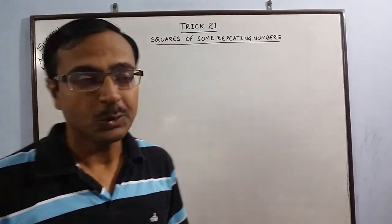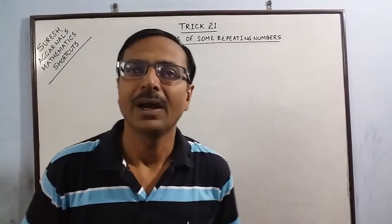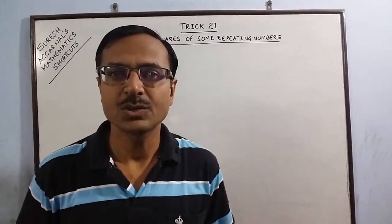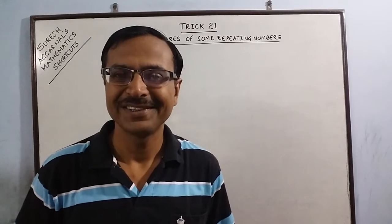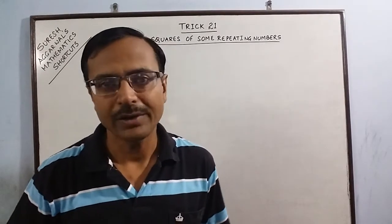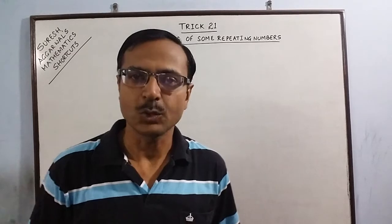Hello friends, today in trick number 21 I am going to deal with squares of numbers having a repeated digit, just like 33, 333, or 999 and so on.